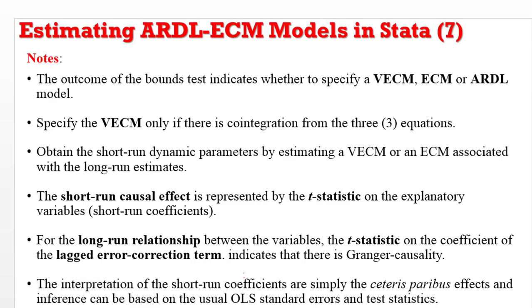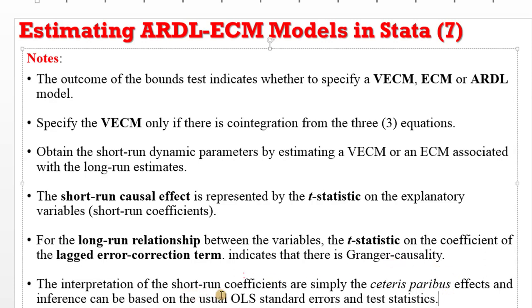To conclude: the outcome of the bounds test will tell you whether to specify a vector error correction model (VECM), an error correction model, or a plain ARDL model. You will only specify a VECM if there is cointegration from all three equations. You will also obtain short-run dynamic parameters when you estimate an error correction model or VECM, associated with long-run estimates. Short-run causal effects are represented by the t-statistic on the explanatory variables for short-run coefficients. For the long-run relationship, the t-statistic of the coefficient of the lagged error correction term tells you whether there is Granger causality — if it is significant, there is Granger causality among the variables. The interpretation of short-run coefficients is simply ceteris paribus effects, because these are OLS estimates.